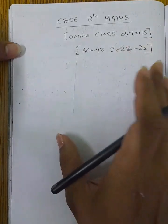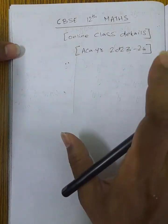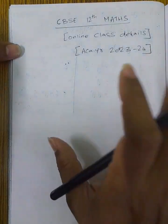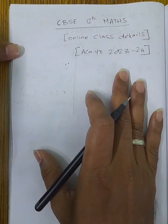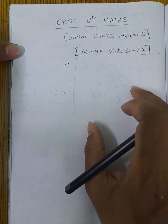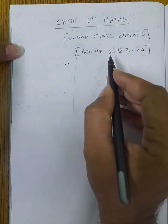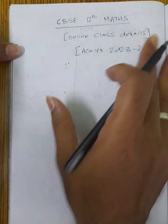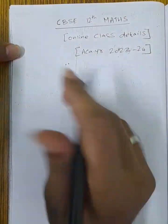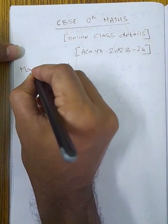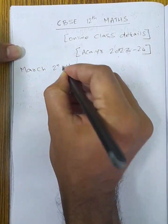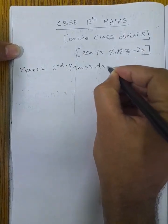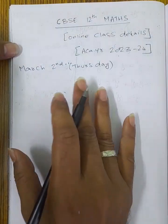The 12th batch online class notification is in February. Now we are going to see CBIC's 12th online class. This is the batch 2023 to 2024. The class details start from March 2nd, Thursday.